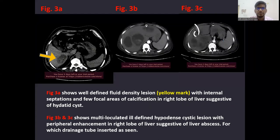The first image shows a well-defined fluid density lesion with internal septation and few focal areas of calcification in the right lobe of liver, suggestive of hydatid cyst. The second and third images show a multi-loculated ill-defined hypodense cystic lesion with peripheral enhancement in the right lobe of liver, suggestive of liver abscess, for which a drainage tube was inserted as seen in figure 3C.